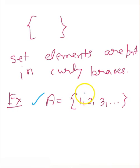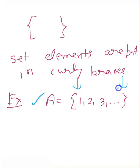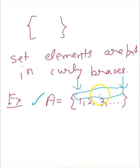The curly braces denote a set, and all the points or members written inside the curly braces are called the members or elements of the set — for example, {1, 2, 3}.